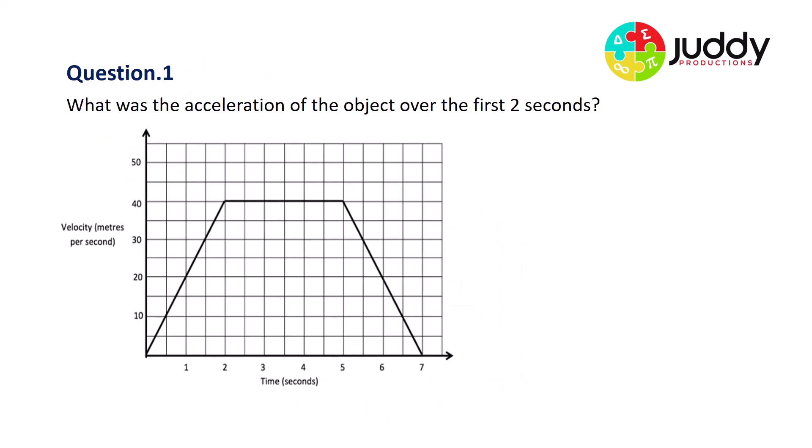Question number one, what was the acceleration of the object over the first two seconds? So here's the first two seconds in red. The acceleration of a velocity time graph is simply equal to the gradient. And the gradient, as we know, is rise over run. So let's look at this red line on our graph and calculate the rise and the run.